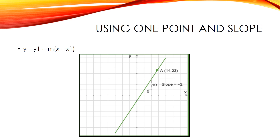The equation of a straight line that passes through a point P1 (x1, y1) with a slope M is: Y − Y1 = M(X − X1).